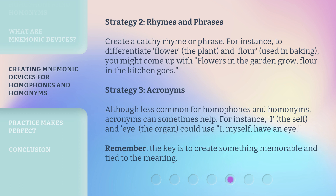Strategy 3: Acronyms. Although less common for homophones and homonyms, acronyms can sometimes help. For instance, 'I' the self and 'eye' the organ could use: 'I, myself, have an eye.' Remember, the key is to create something memorable and tied to the meaning.